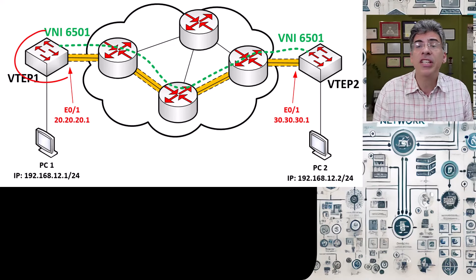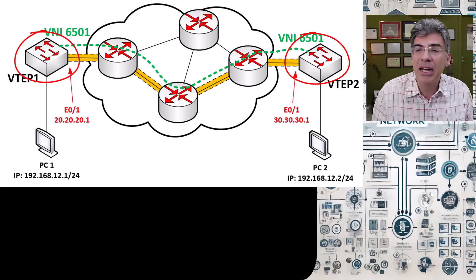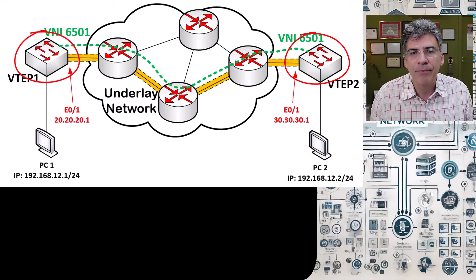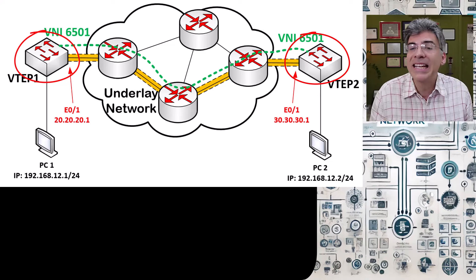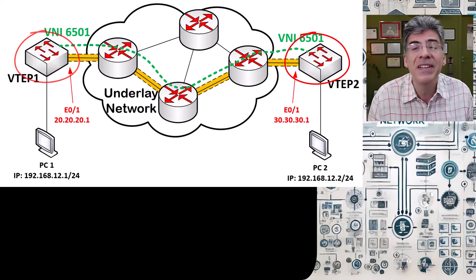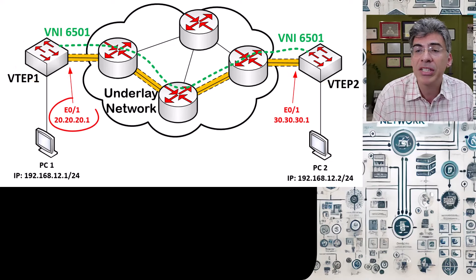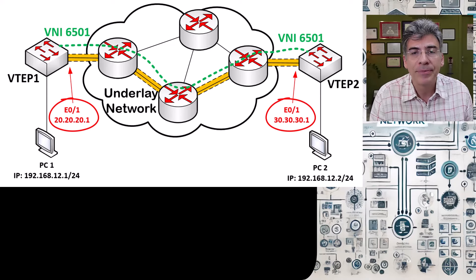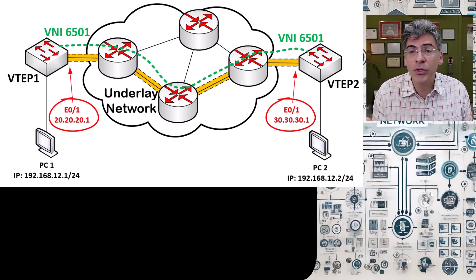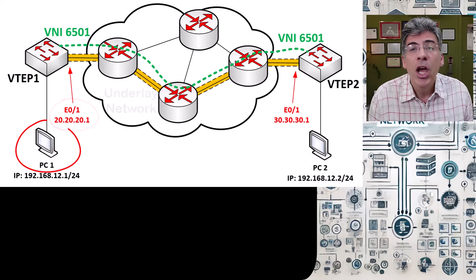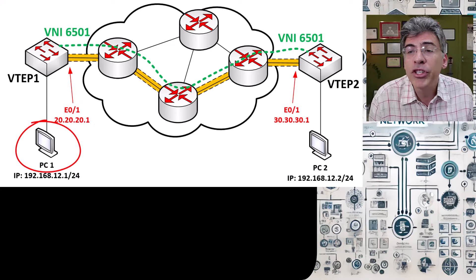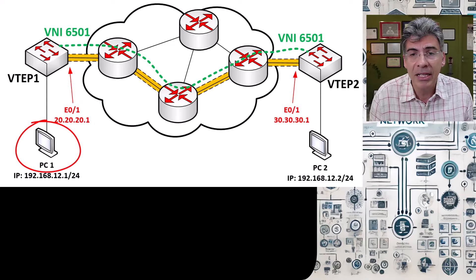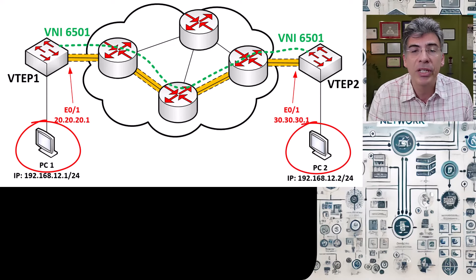Now these two switches are connected to the underlay network, but we won't deal with the underlay network today. We assume that VTEP1 is able to reach VTEP2 from its IP address to the other over that underlay network. We're going to configure these switches so that PC1 will be able to share the same broadcast domain or network segment with PC2.